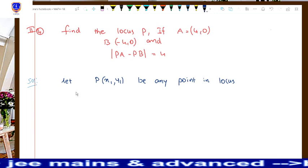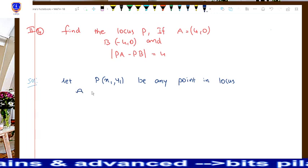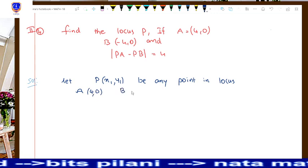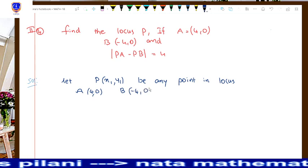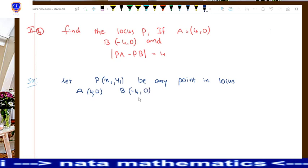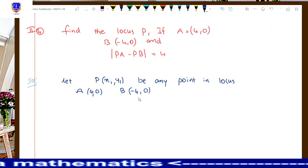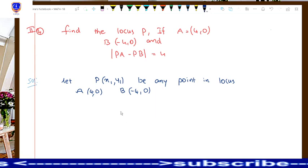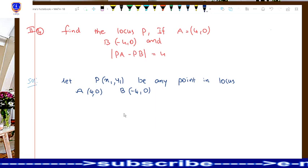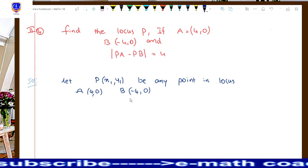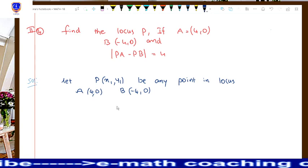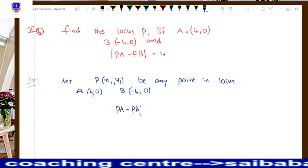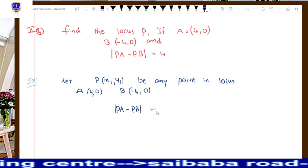Next, we have to mention the given points in the question. Two points were given: capital A which is (4, 0) and capital B which is (-4, 0). Next, we have to mention the equation — here in this question the equation was mentioned as a direct equation: mod PA minus PB is equal to 4.